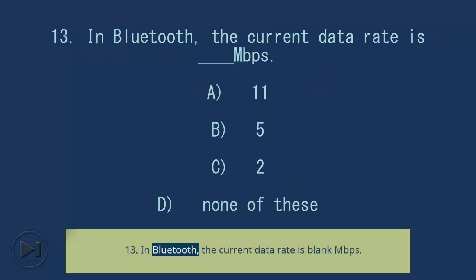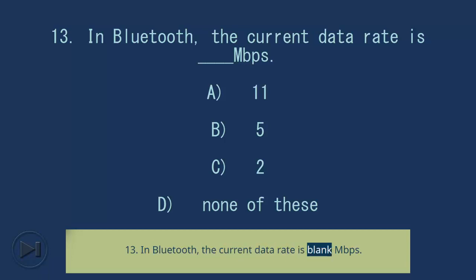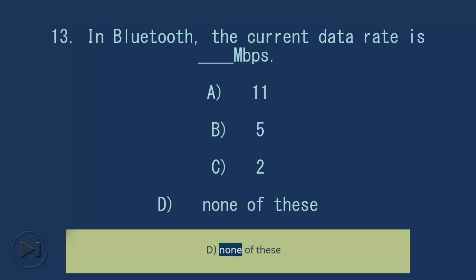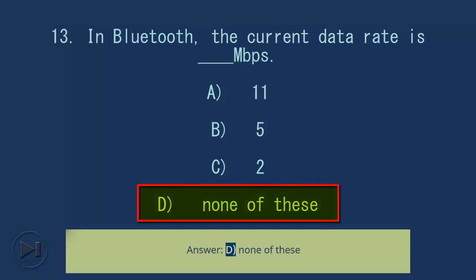Question 13: In Bluetooth, the current data rate is blank Mbps. A. 11, B. 5, C. 2, D. None of these. Answer: D. None of these.